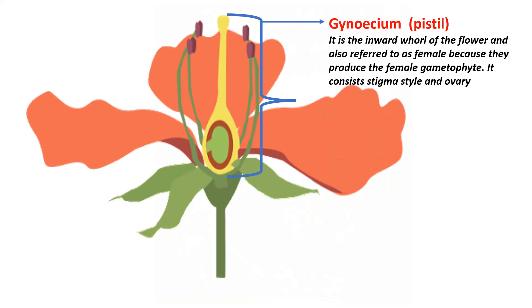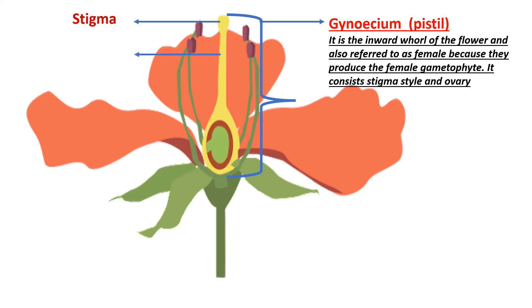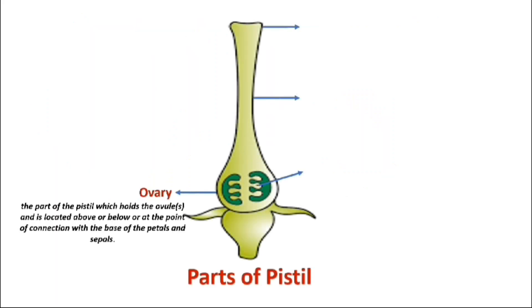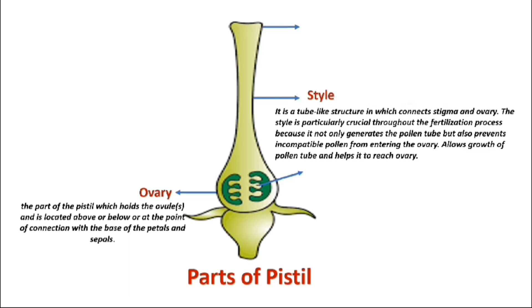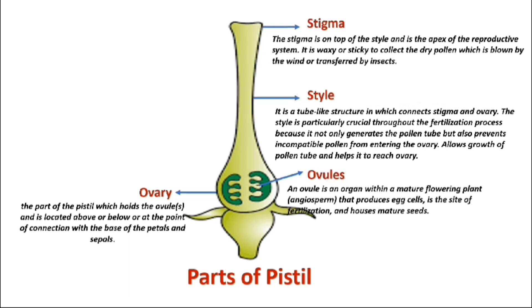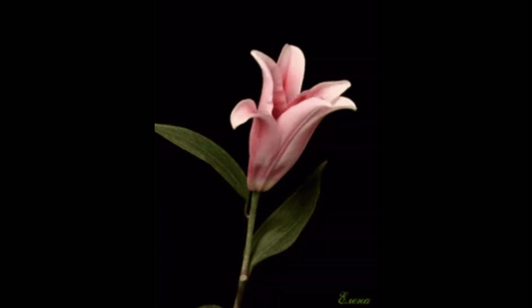Gynoecium: the female reproductive part of the flower, located at the center. It consists of one or more carpels, each composed of an ovary, style, and stigma. The ovary is the swollen base of the carpel that contains ovules. The style is the slender stalk-like part of the carpel that connects the ovary to the stigma — the receptive surface at the top of the style where pollen grains land during pollination.